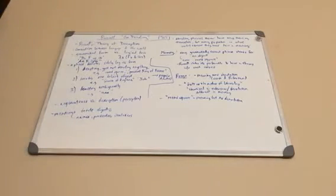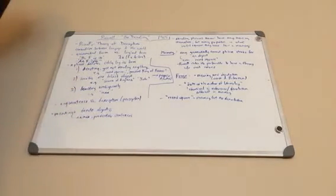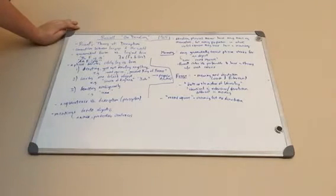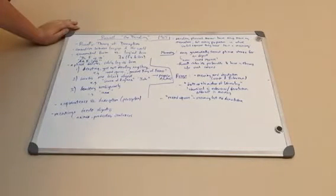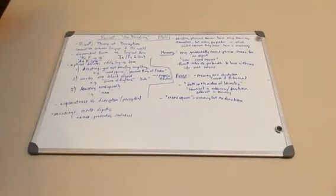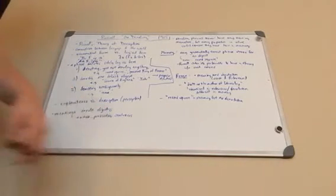He talks about acquaintance versus description and perception — in his article 'Knowledge by Acquaintance versus Knowledge by Description,' which I do have a video about. Pretty much in that article, he says that to know something, you have to know it — meanings denote objects: names, predicates, and sentences.